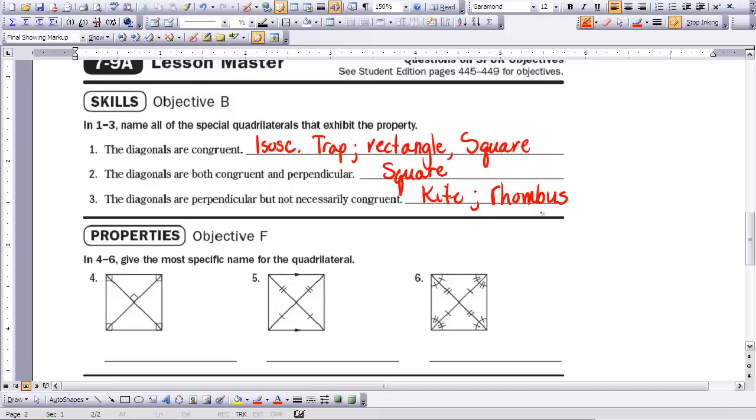But a rectangle does not have perpendicular diagonals. So this has to be a square.